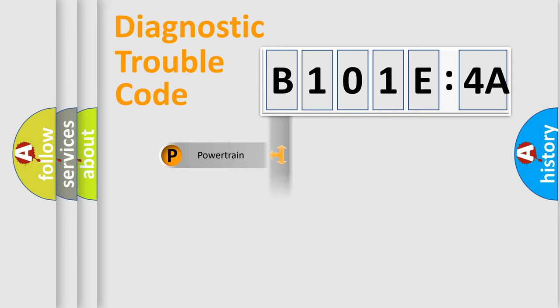Powertrain, body, chassis, and network. This distribution is defined in the first character code.